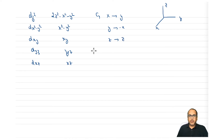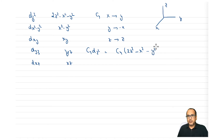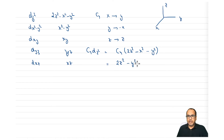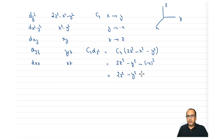Now if we want to see the effect of C4 on d_z², which has the form 2z² - x² - y²: the fate of z is z, so that does not change. The fate of x is y, so x² becomes y². The fate of y is -x, so y² becomes x². This gives 2z² - y² - x², which is the same as d_z². The negative becomes positive, giving us 2z² - x² - y².